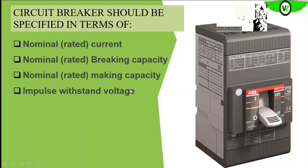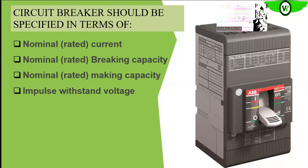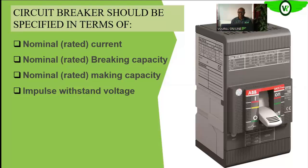Another parameter to understand is the impulse withstand voltage. When we say impulse withstand voltage, we are talking about the maximum voltage surge — such as a lightning surge — that can go through the circuit breaker without damaging it or its insulation. It is usually rated in kilo volts.